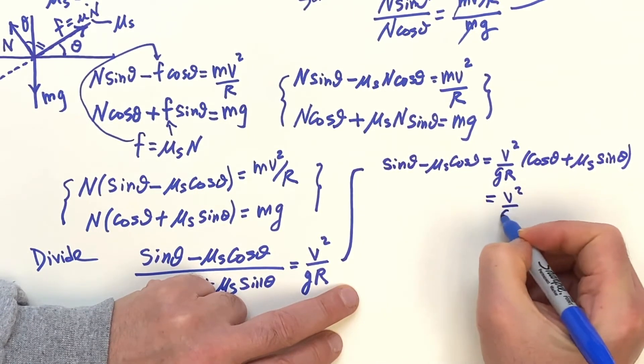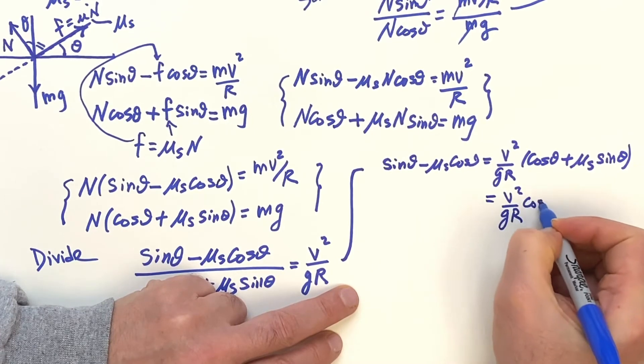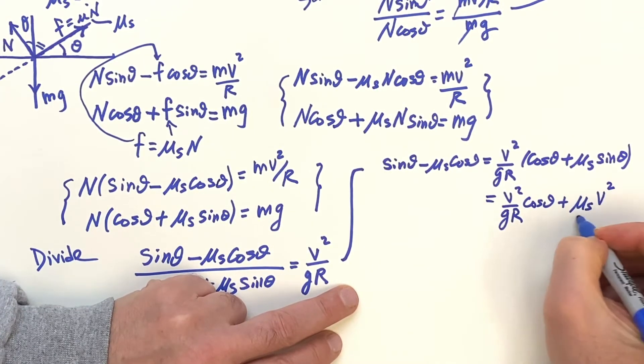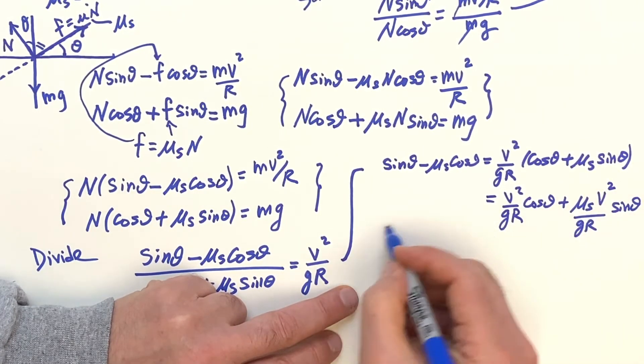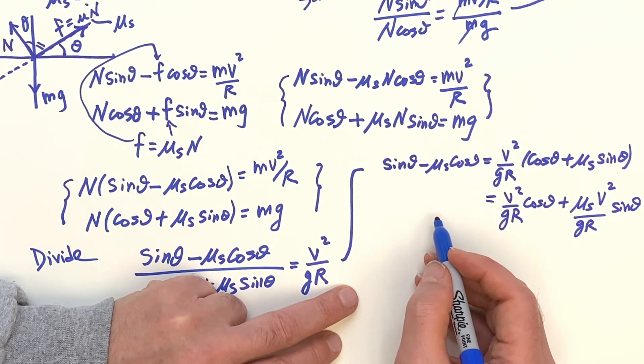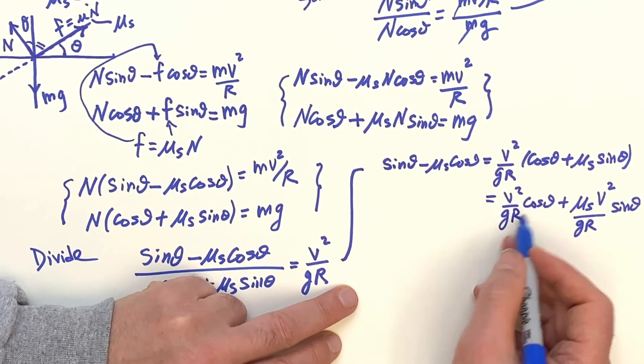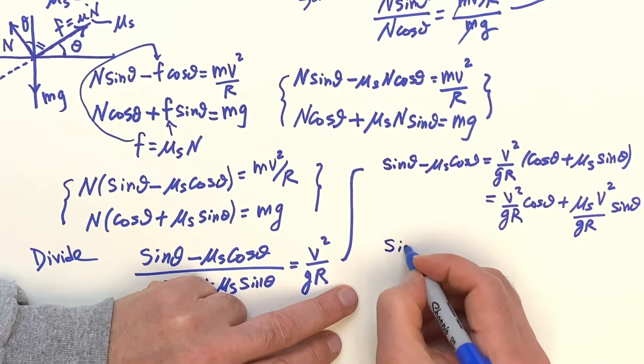This is V squared over G, R cosine. And then I have the Mu, S, V squared over G, R, the sine. Because I want these Mu, S's on one side of the equation, and say, is what I want. So I really want to get this on the other side of the equation, and get this cosine one on the left. So I'm going to have the sine of theta.